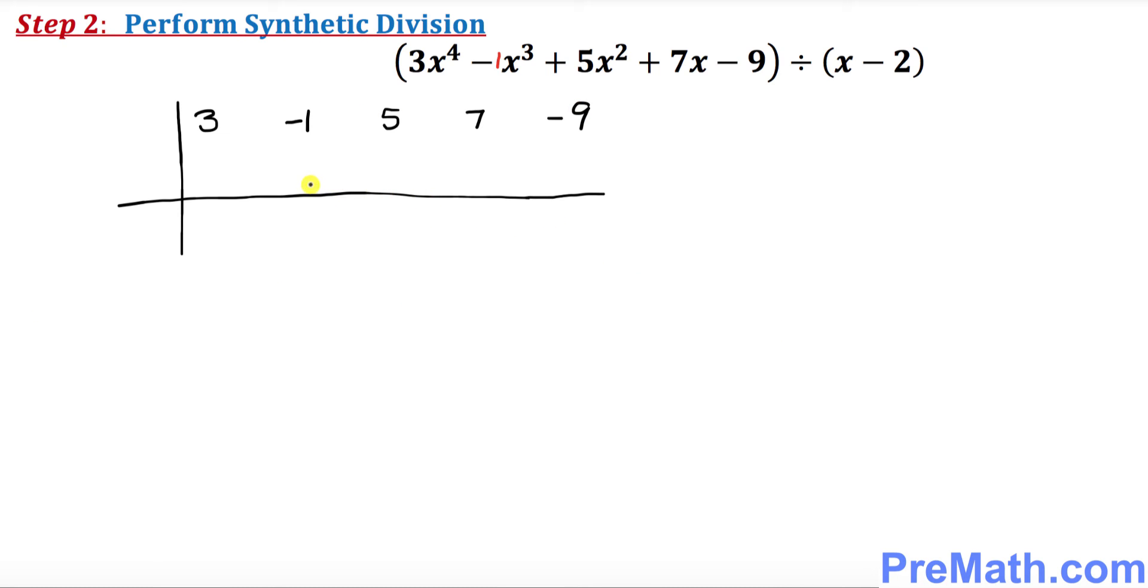And finally in this step we're going to perform our synthetic division. So the very first thing that you can see is I put down the coefficients of the dividend right up there: 3, negative 1, 5, 7 and negative 9. And over here what is the number you see in the divisor? Negative 2. The opposite sign of negative 2 is positive 2. So I'm going to put positive 2 right up here.